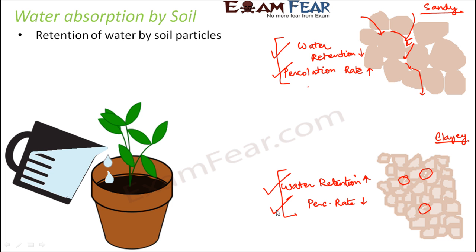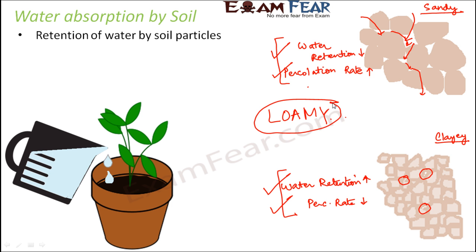Depending upon the requirements of the plant, if a plant needs a soil that holds more water, then clayey soil would be more suitable. When you talk about loamy soil, it is in between these two extremes. Loamy soil is considered the most suitable soil because it has the right amount of water retention and the right percolation rate — it is not at either extreme, but just in between the two.